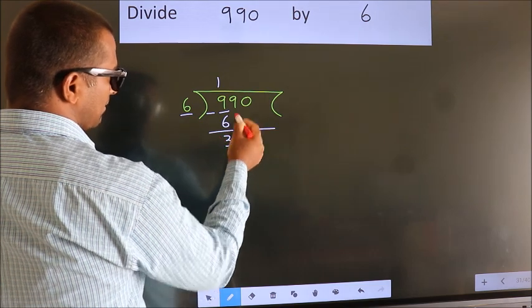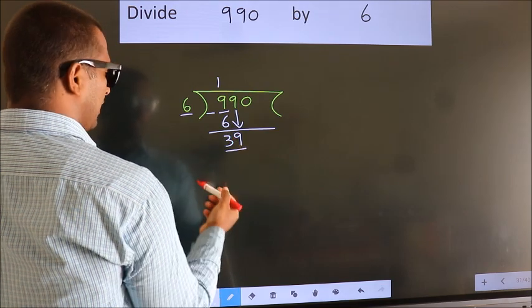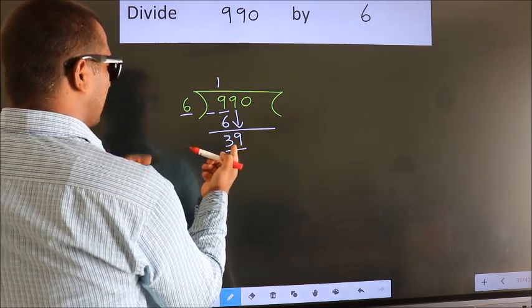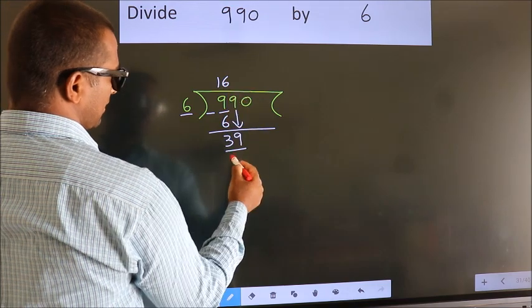After this, bring down the beside number. So 9 down. So 39. A number close to 39 in 6 table is 6, 6, 36.